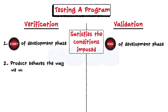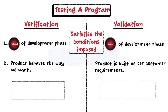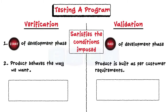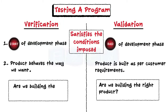Validation is to make sure the product is built as per customer requirements. Basically, we check: validation — are we building the right product? Verification — are we building the product right?